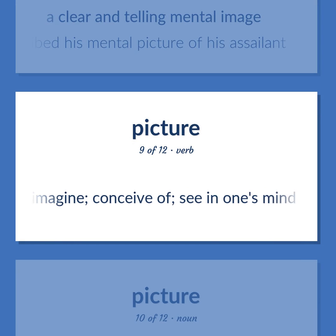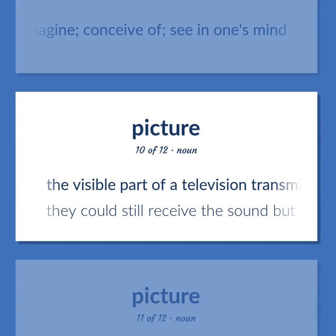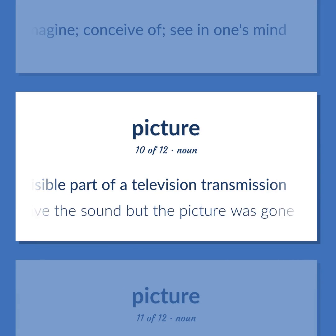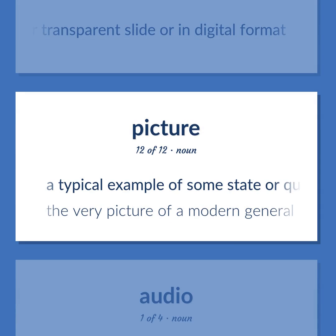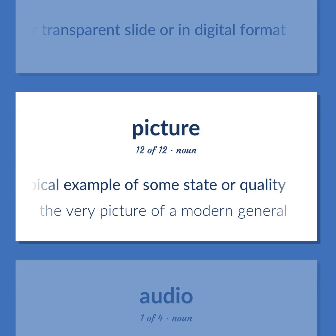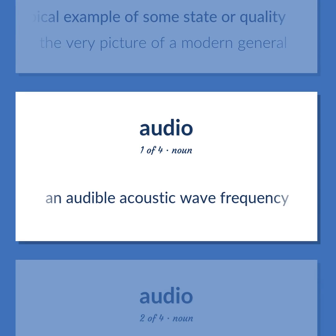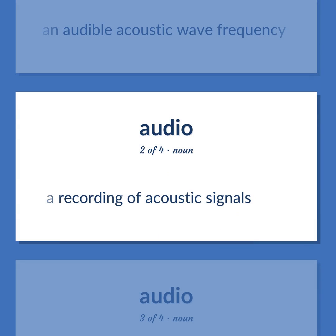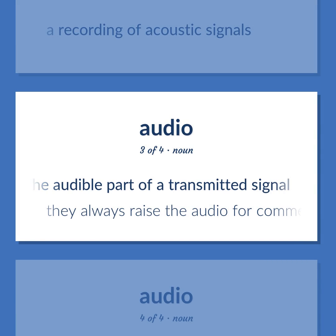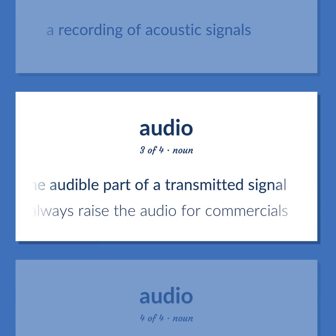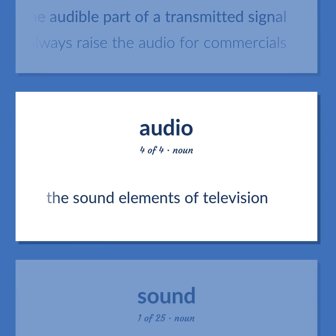Picture: imagine, conceive of, see in one's mind. The visible part of a television transmission — they could still receive the sound but the picture was gone. A representation of a person or scene in the form of a print or transparent slide or in digital format. A typical example of some state or quality — the very picture of a modern general. Audio: an audible acoustic wave frequency. A recording of acoustic signals. The audible part of a transmitted signal — they always raise the audio for commercials. The sound elements of television.